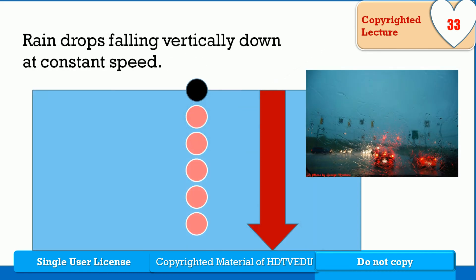Raindrops, you know, come down at constant speed. So raindrops falling vertically down at constant speed, that is linear motion.